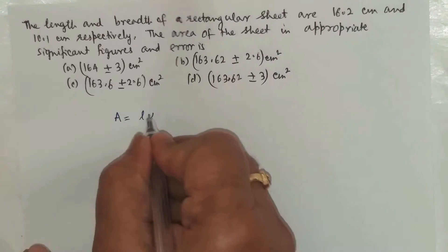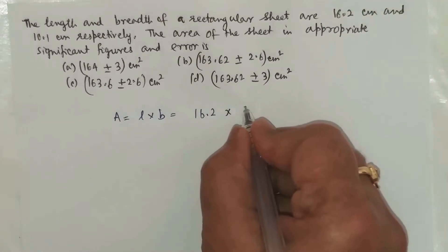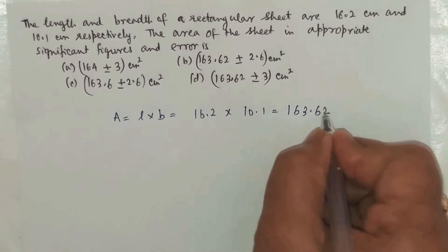Let's check. Area equals length times breadth. Length is 16.2 cm and breadth is 10.1 cm. This gives 163.62 cm².